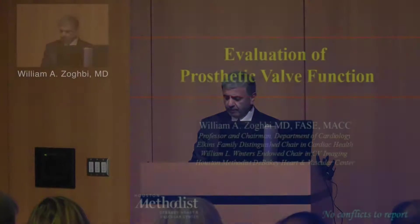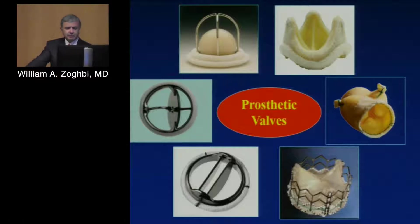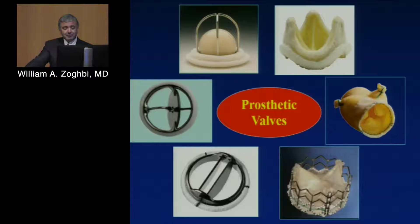I think this is a nice continuation after we talked this morning about gradients, valve areas, and the like with native valves. As you all know, it is a challenge when you have a prosthetic valve, because with prosthetic valves you have so many kinds to deal with — be it the bioprosthetic valve, or the stentless ones, which probably have among the best velocity profile.